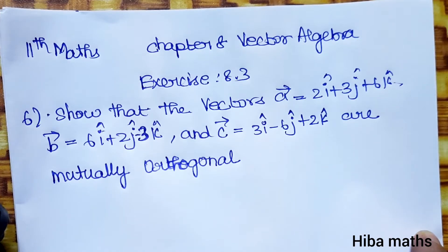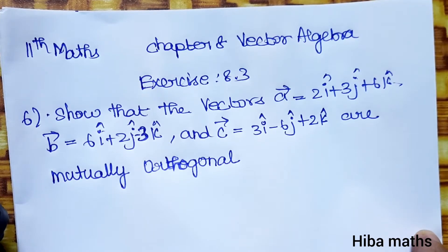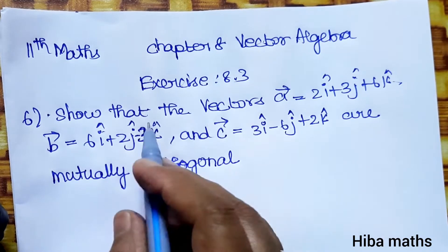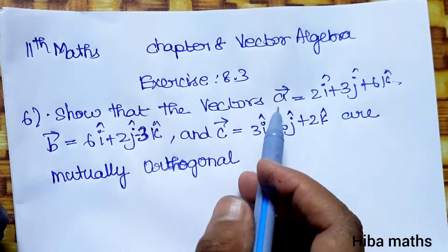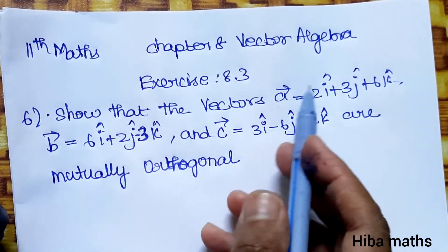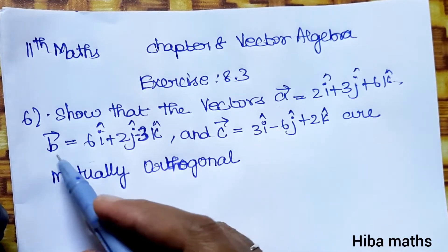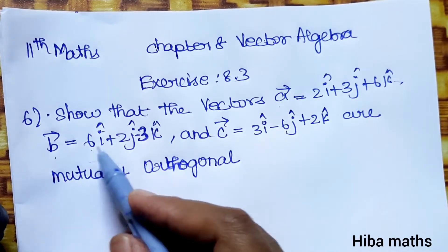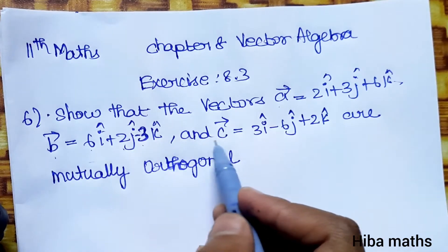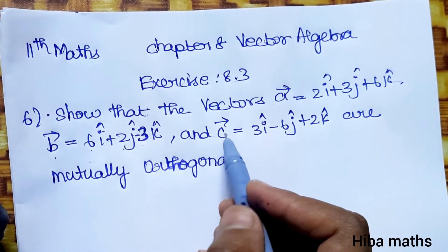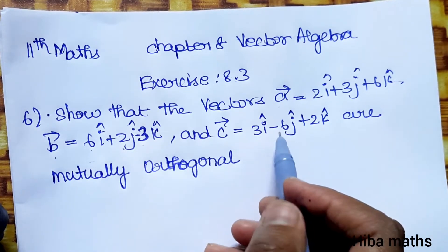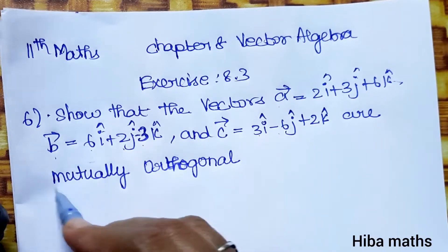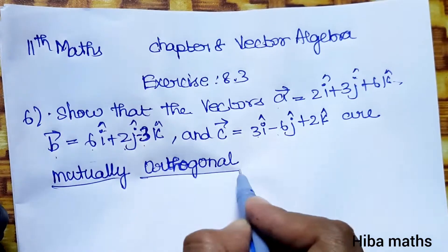Hello students, welcome to Hiva Max. 11th Standard Max Chapter 8 Vector Algebra, Exercise 8.3, 6th Question. We will solve the problem: show that the vectors A vector 2i plus 3j plus 6k, B vector 6i plus 2j minus 3k, and C vector 3i minus 6j plus 2k are mutually orthogonal.